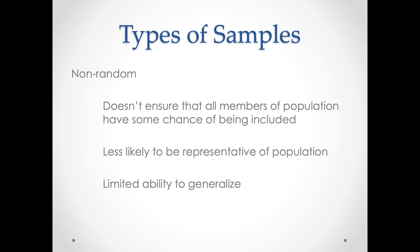We might also do snowball sampling. Snowball sampling is a technique where we identify one person within a category of interest to us, and then we ask that person to refer us to other people who fit within a similar category. Snowball sampling is often done during interview research. In some of my own research, I write on elites or on wealthy people, and wealthy people are not the easiest to access.